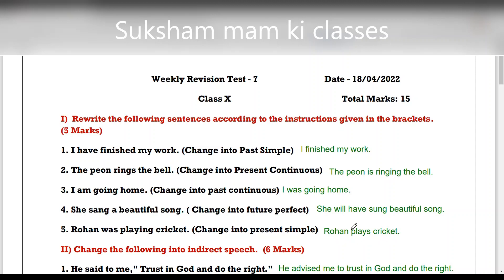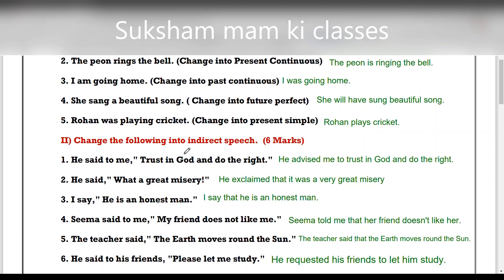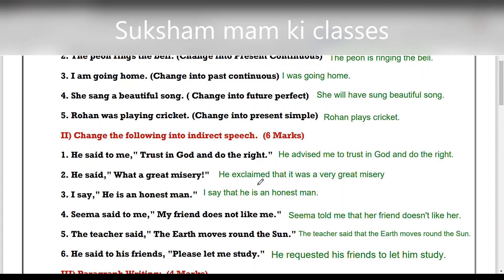Next: 'Change the following into indirect speech' — this carries six marks. 'He said to me, trust in God and do the right.' Answer: 'He advised me to trust in God and do the right,' because he gave advice. 'He said, what a great misery!' — exclamatory sentence: 'He exclaimed that it was a great misery.' 'I say, he is an honest man' — since reporting verb is present tense, no backshift: 'I say that he is an honest man.'